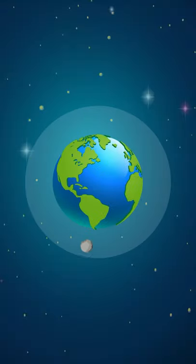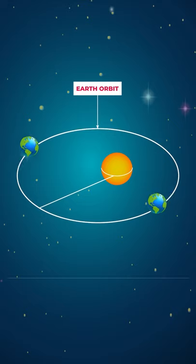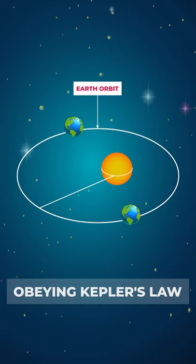And suppose if you throw a rock at the speed of escape velocity, the rock will form an orbit revolving around the Earth and will never fall. In the same way, all the planets are traveling at certain speeds and are revolving around the sun in elliptical orbits, obeying Kepler's laws of planetary motion.